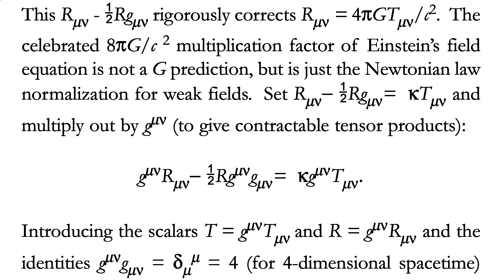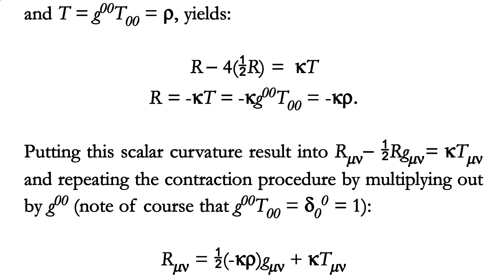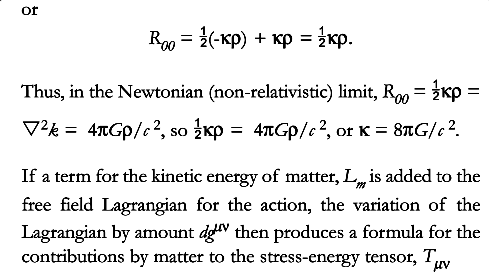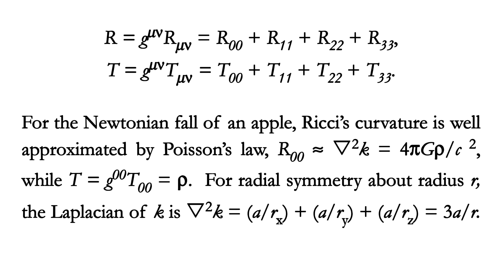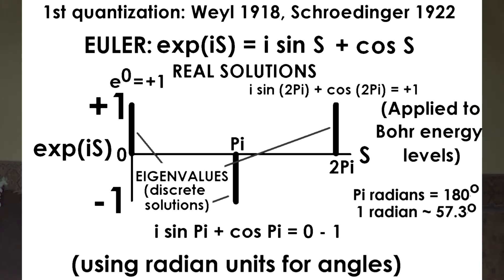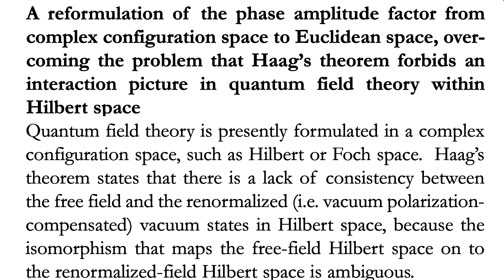Weyl's problem in 1918 was trying to quantize space and time. Schrödinger, in 1922, took Bohr's theory and married it to Weyl's exponential complex equation. The quantization occurs through the real solutions to the complex exponent exp(is). It's quantized as a rotation on a complex plane.